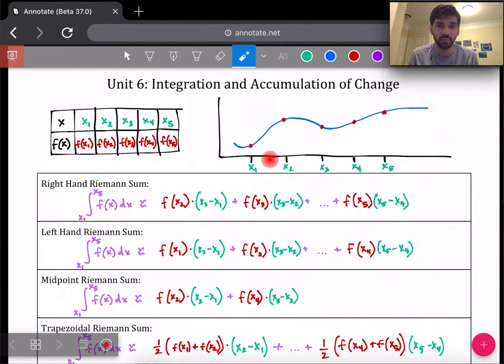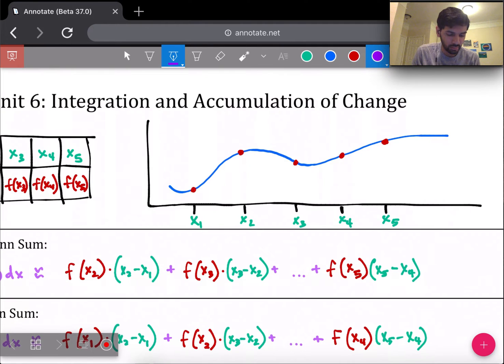A right-hand Riemann sum is you start from your first interval, and right-hand means you take the right endpoint of each interval. So I find the right endpoint here of this first interval, which is x2. Now I'm using a rectangle to approximate the area under the graph. So the height of this first rectangle using a right-hand Riemann sum uses the right endpoint of each interval, and you go up to the height of the function at that point.